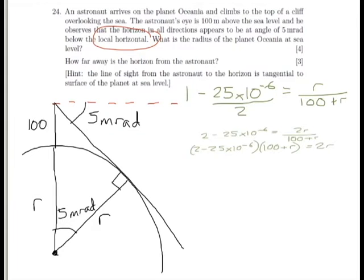Let's expand out those brackets, so we start with 200, which is our first 2 times 100, take away 25 times 10 to the minus 6 times 100, which is 25 times 10 to the minus 4.